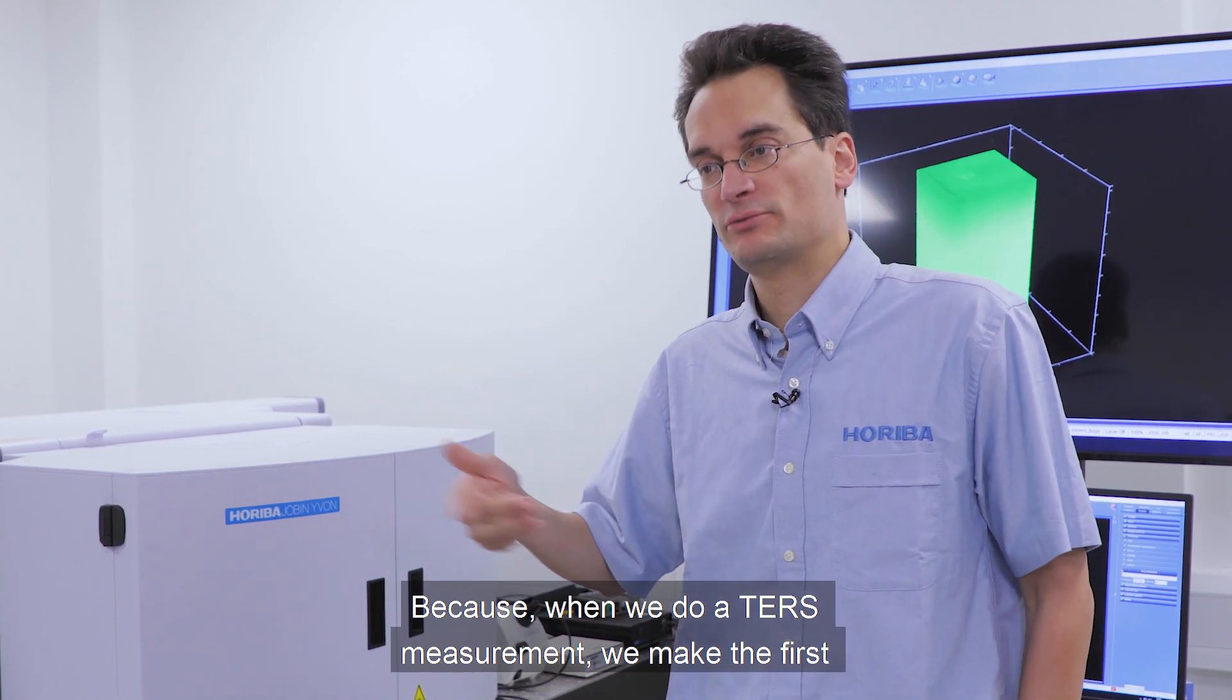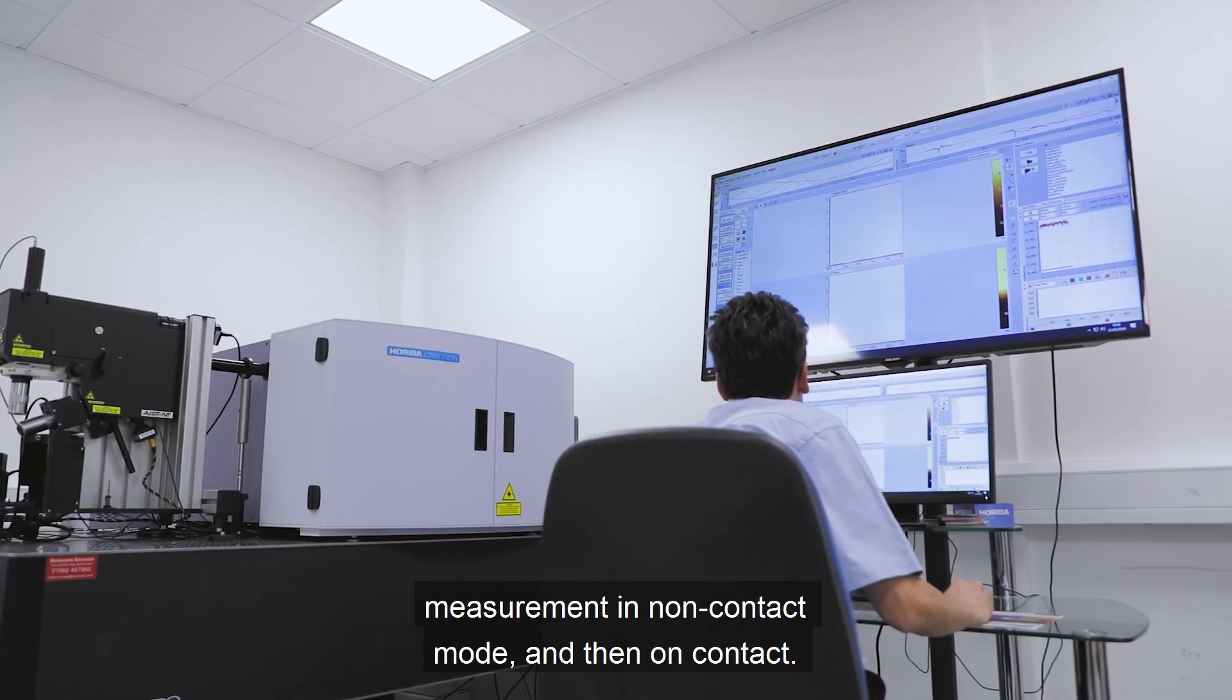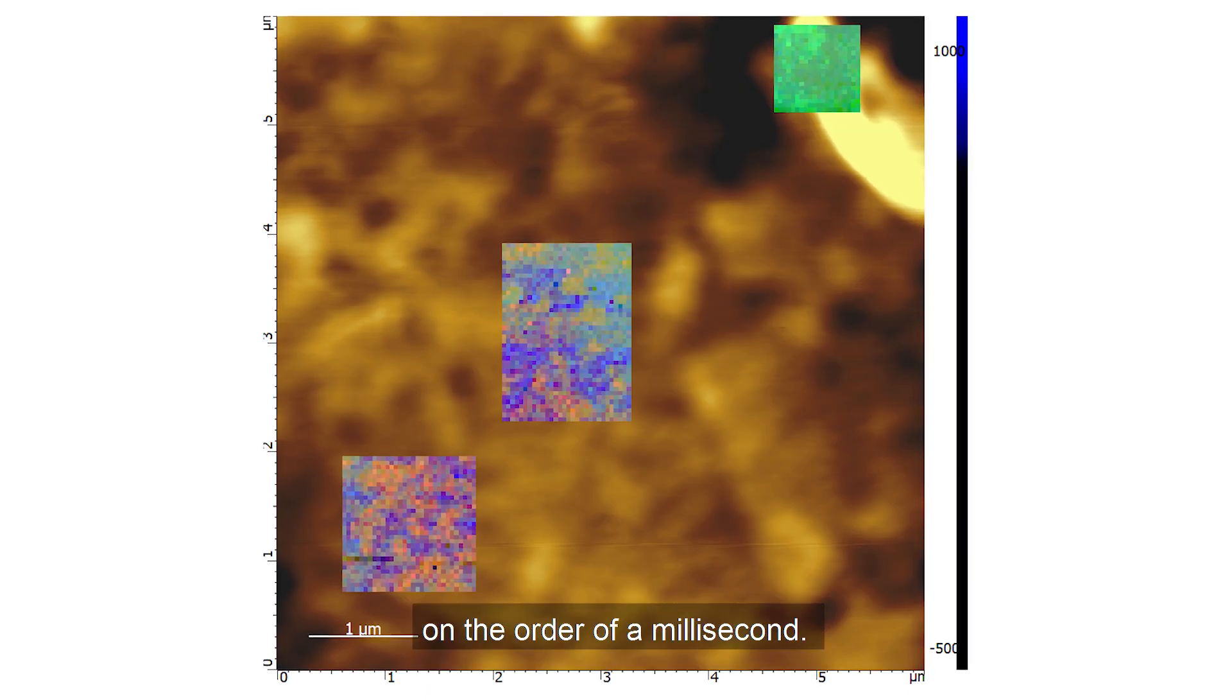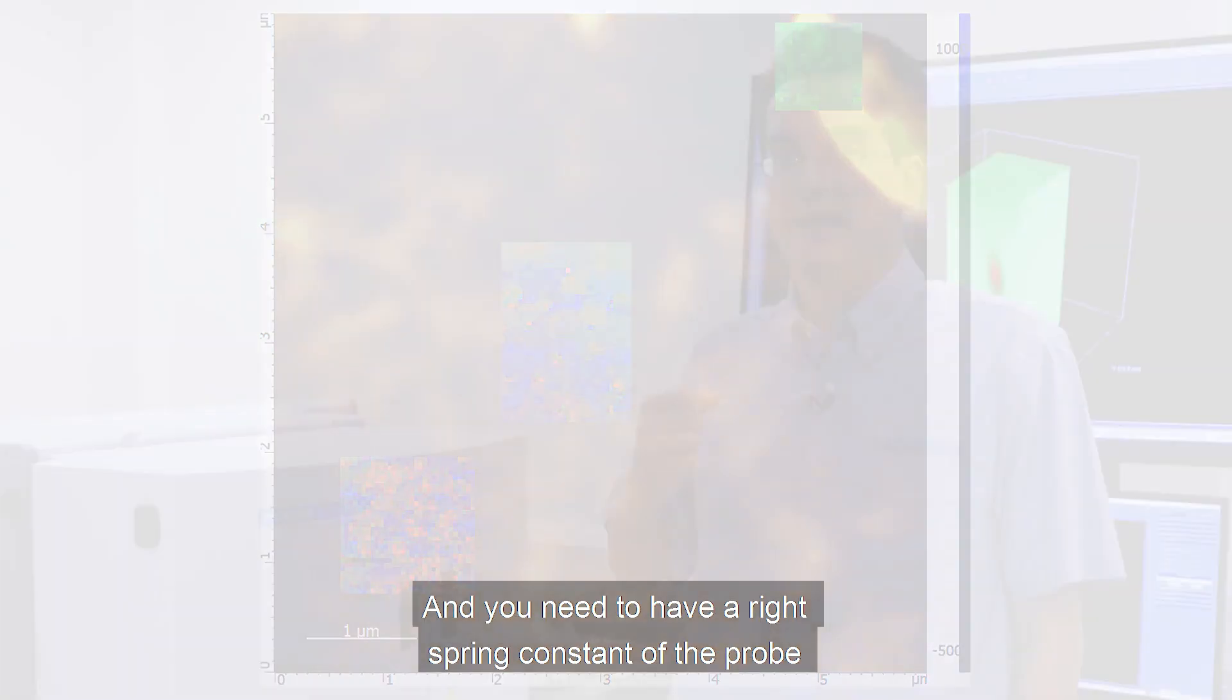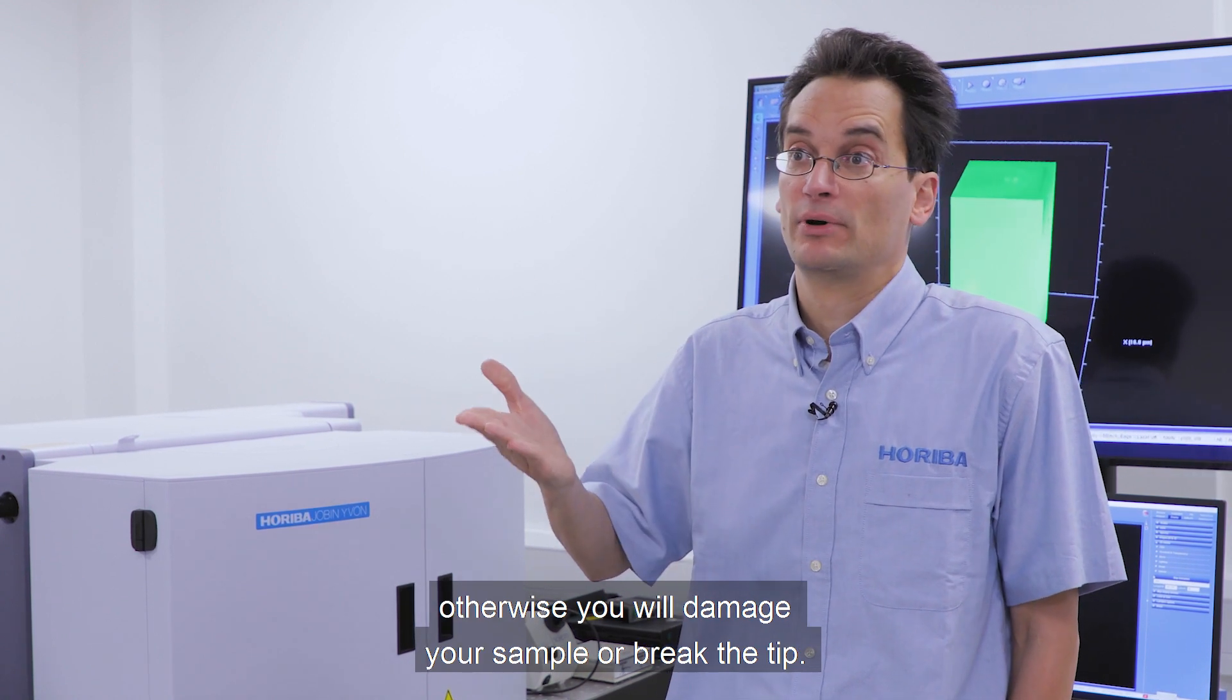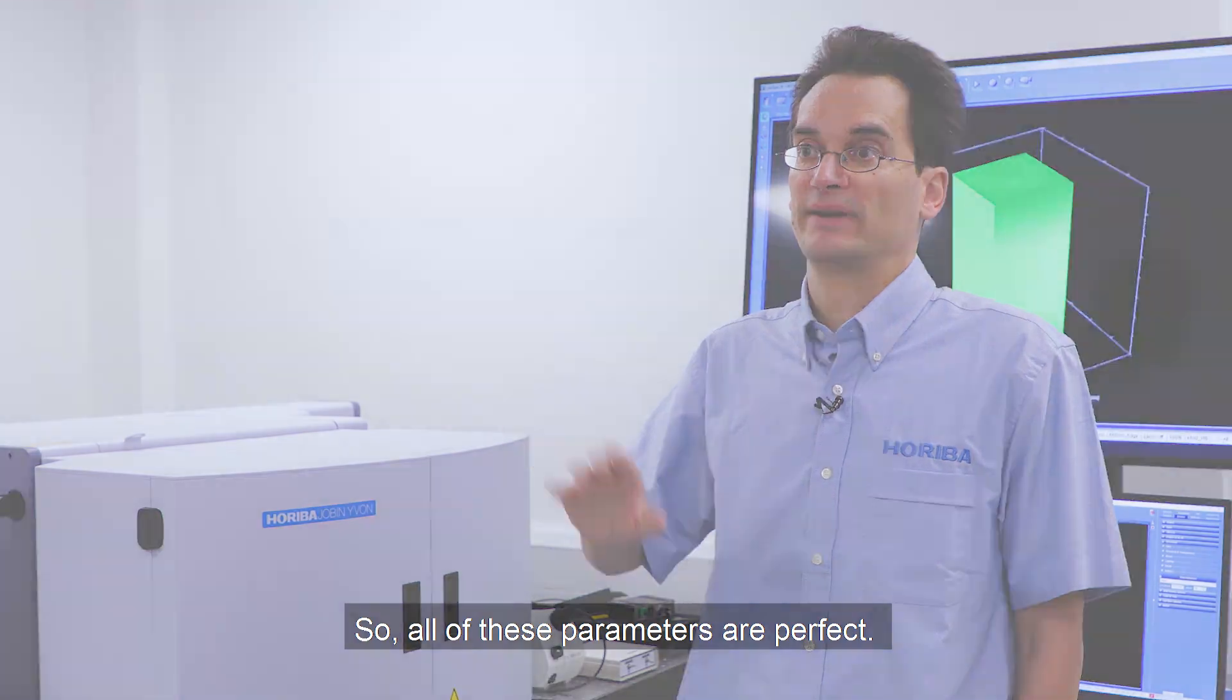in contact and non-contact mode. When we do a TERS measurement, we make a first measurement in non-contact mode and then in contact. You have to swap between the two modes very quickly, on the order of a millisecond. You need to have the right spring constant, otherwise you'll damage your sample or break the tip.